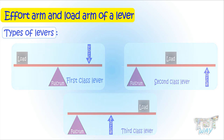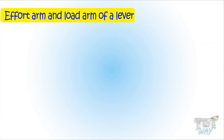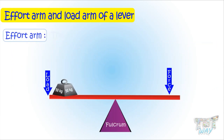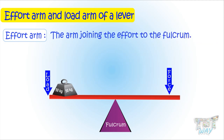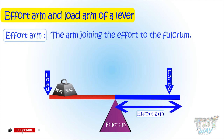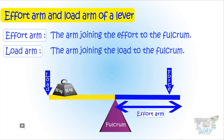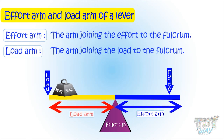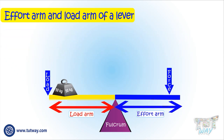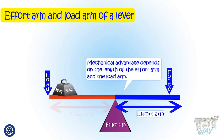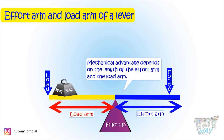Now let's learn about the effort arm and load arm of the lever. The arm joining the effort to the fulcrum — or the distance between the effort and the fulcrum — is the effort arm. The arm joining the load and the fulcrum, or the distance between the load and the fulcrum, is known as the load arm. It's the length of the load arm and effort arm that decides the mechanical advantage of that type of lever.